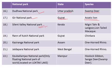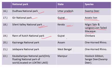The Silent Valley National Park is situated in the state of Kerala and is famous for the Nilgiri Thar, the Nilgiri langur, and the lion-tailed macaque. Next is the Rann of Kutch National Park, situated in the state of Gujarat, famous for the chinkara.